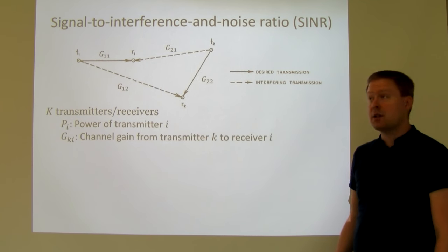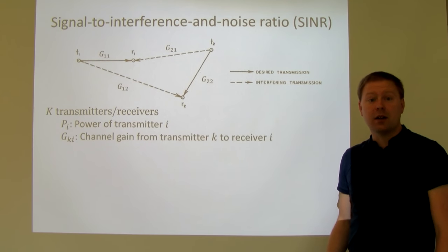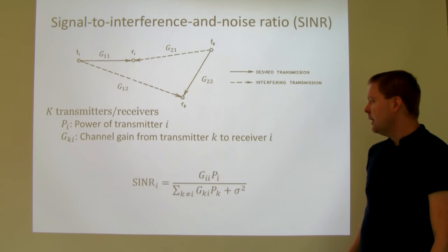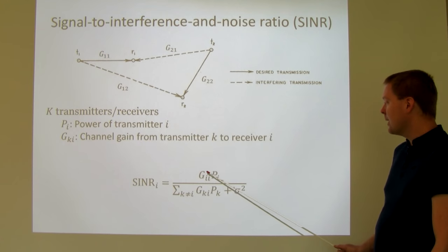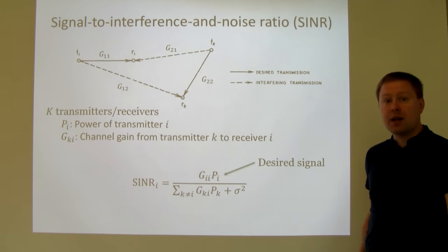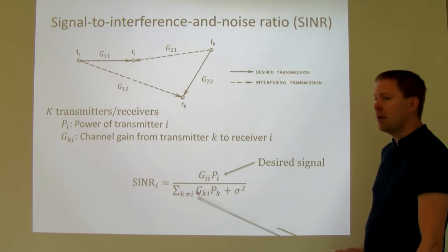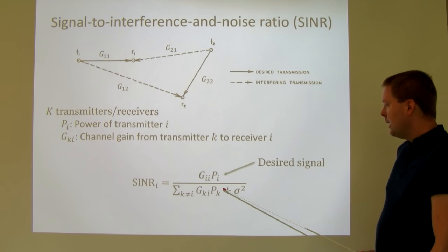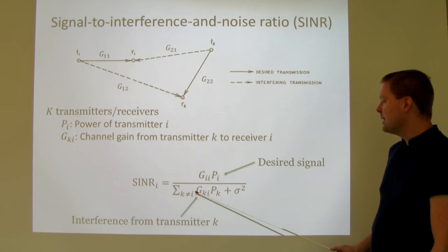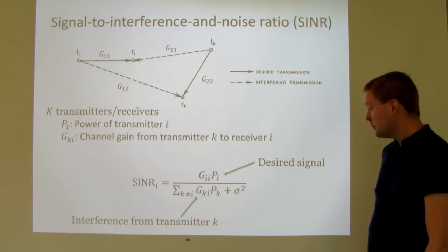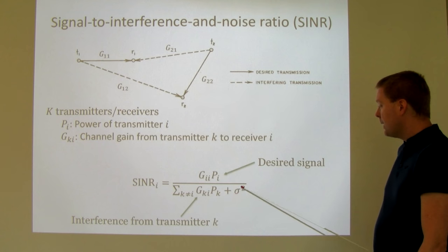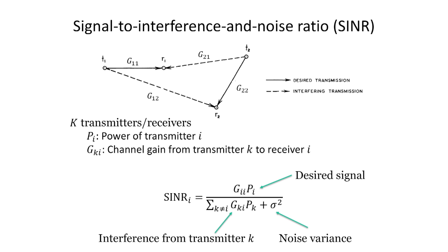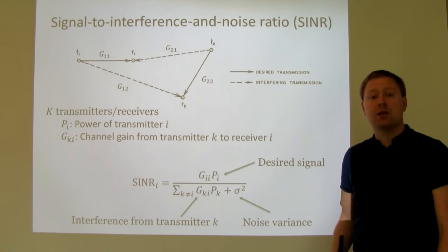To measure performance, the Signal-to-Interference-and-Noise Ratio (SINR) is a typical way of capturing performance. The SINR for transmission to receiver I has a particular form: it is a fraction where the numerator has the desired signal — PI times GII, the channel from the transmitter to itself. In the denominator, the first term is interference, summed over all other transmitters K, using their channel gains and transmit powers. The second term is the noise variance. This is the standard way of writing SINR, and it serves as a baseline to measure system performance.